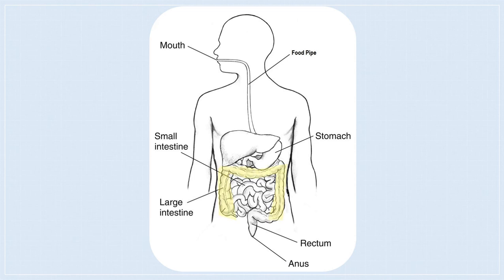So the digestive system is a system which consists of the mouth, food pipe, stomach, small intestine, and large intestine.